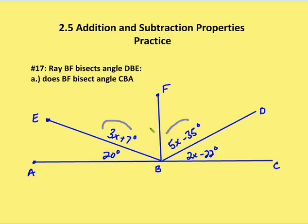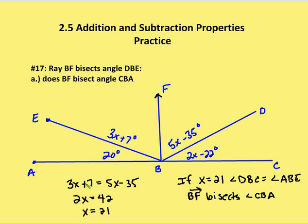So we can solve for x. 3x plus 7 equals 5x minus 35. Then 2x equals 42, so x equals 21. If x is equal to 21, then angle DBC is going to be equal to angle ABE because 2 times 21 minus 22 equals 20. So both ABE and DBC are going to be 20 degrees.